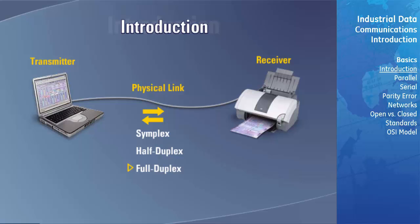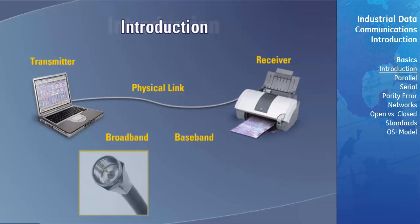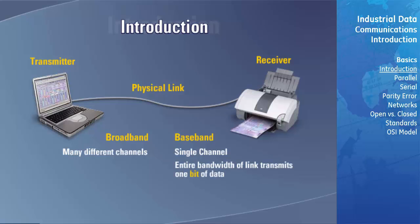The medium over which the signals travel from one device to the other can be described as either baseband or broadband. The most common example of a broadband medium is the cable used for home cable TV. This cable carries many different channels of information at the same time, whereas a baseband medium carries a single channel of information. Within a baseband link, the entire bandwidth of the link is used to transmit one bit of data at a time.